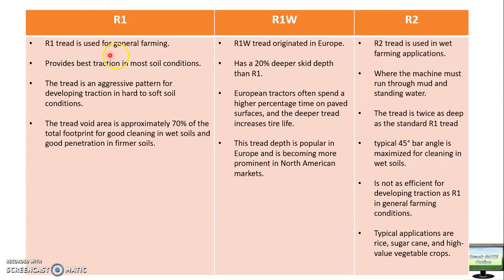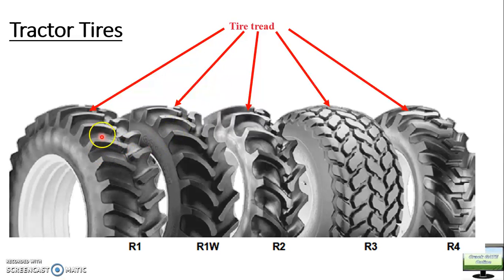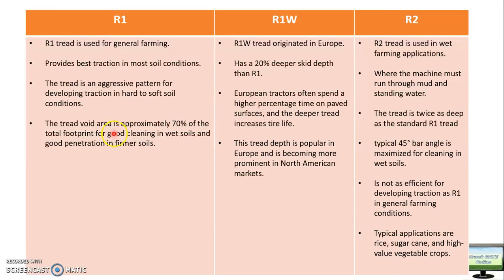R1 is the general purpose tire which can be used for general farming in almost all soil conditions. It has an aggressive tread pattern and the tread-to-void area ratio is approximately 70% of the tire footprint area. This is the most popular tire used for agricultural purposes. R1W originated in Europe and has 20% deeper lug depth than R1. It is not quite as popular as R1 but is also being used in India.